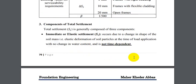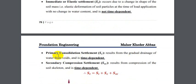المركبة الثانية هي Primary Consolidation Settlement (S_c)، يحدث نتيجة البزل التدريجي للمياه من الفراغات بين حبيبات التربة (results from the gradual drainage of water from voids)، وهو time dependent، أي يستمر مع الوقت نتيجة الأحمال المسلطة.